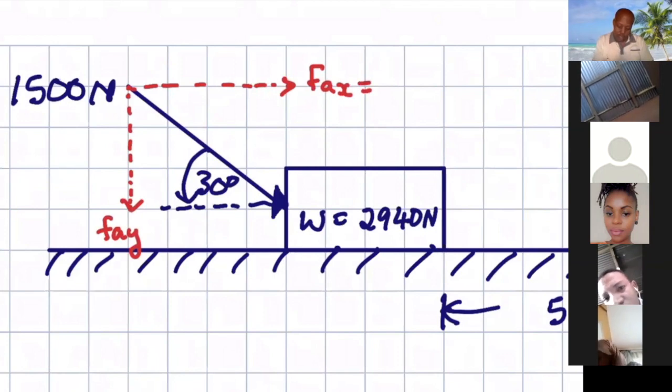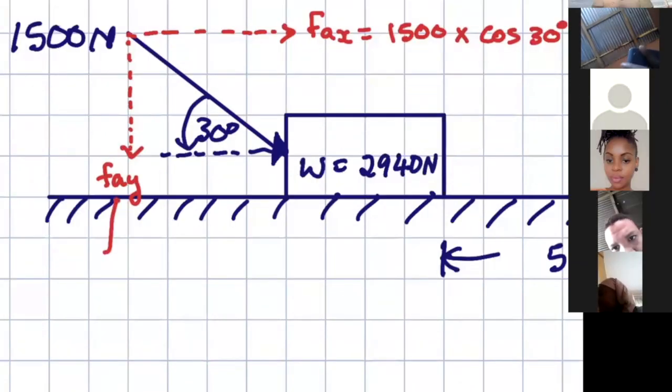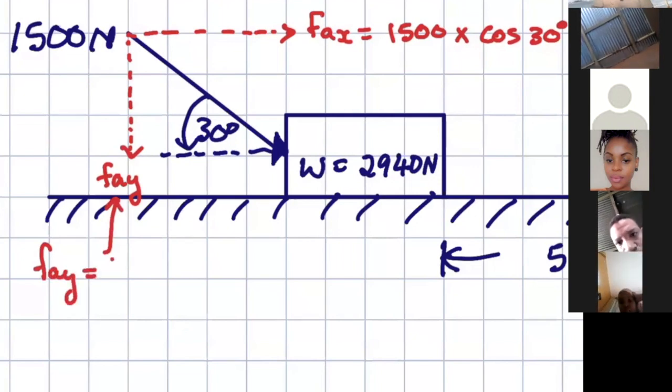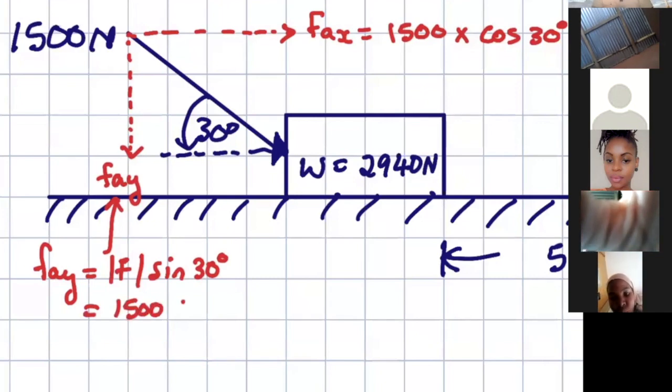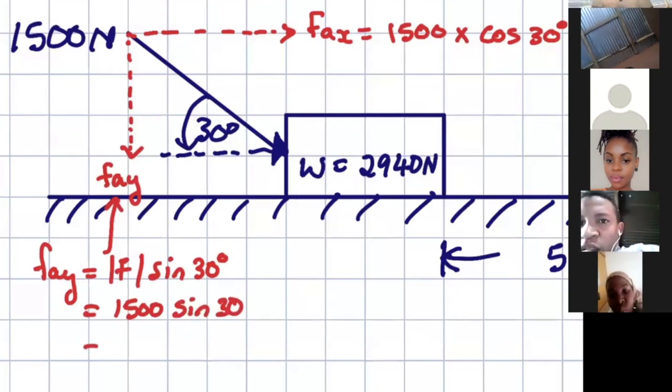So this, we said that is going to be 1,500 newtons, will be the magnitude of the force, as we know from there, multiplied by the sine of this angle of 30 degrees. Let's say 1,500 newtons, multiplied by the sine of 30.